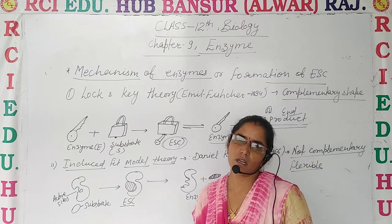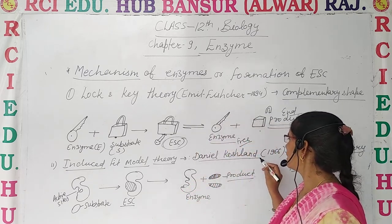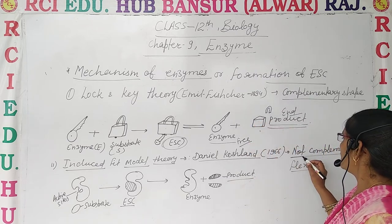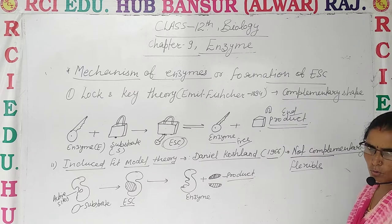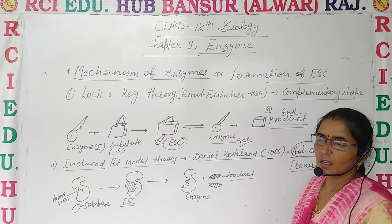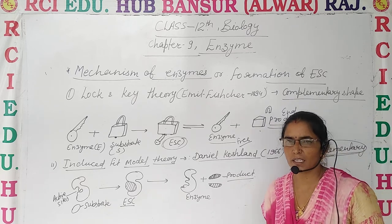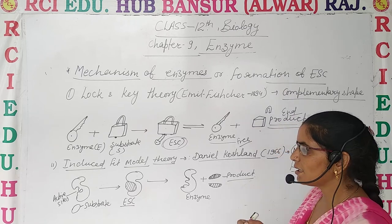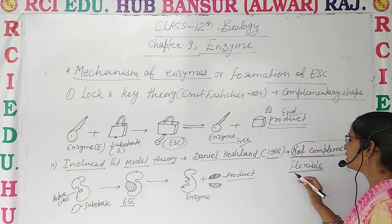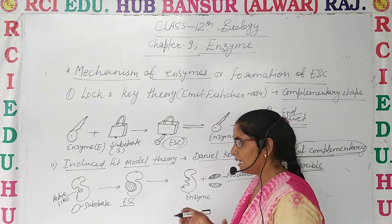The Induced Fit model — what does this theory mean? It rejects the Lock and Key theory. Daniel Koshland gave this theory in 1966. He said that substrates and enzymes are not complementary to each other. It is not necessary that the enzyme's active site is pre-shaped for the substrate, because the active sites are flexible, not rigid.